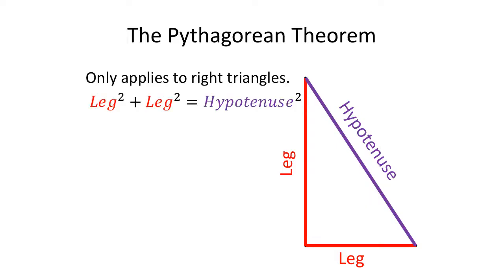So this is the actual theorem of Pythagoras. You take this leg and this leg, take those values to the power of 2 — we say we square them — and if you look at the hypotenuse and square it, they're equal.